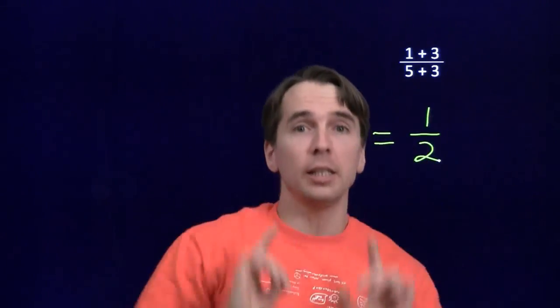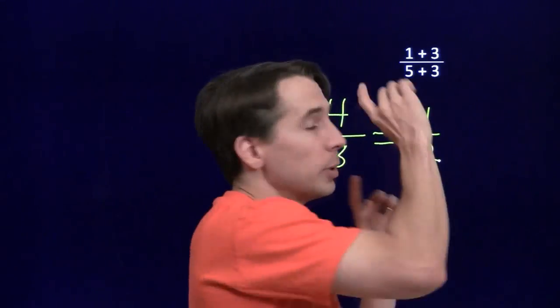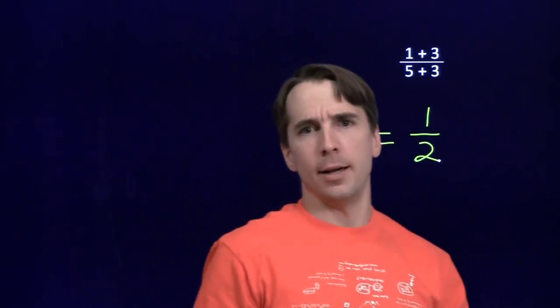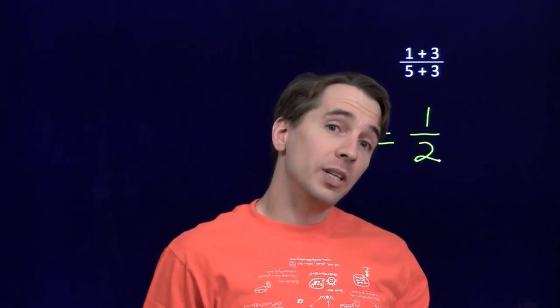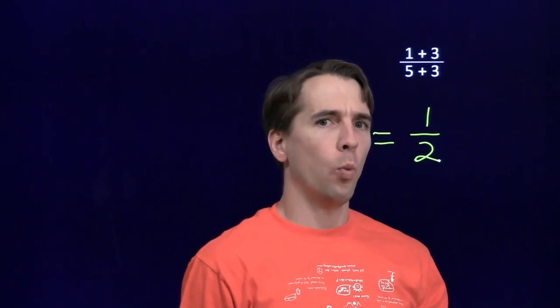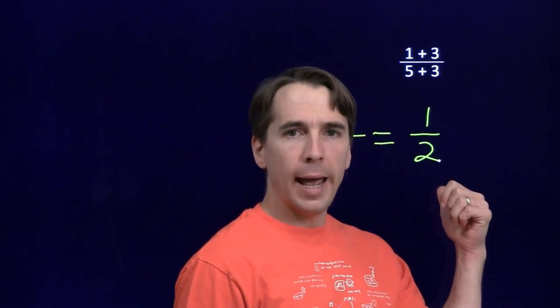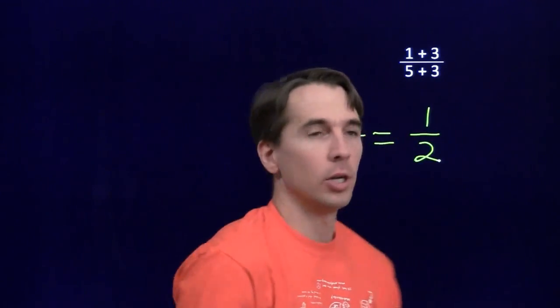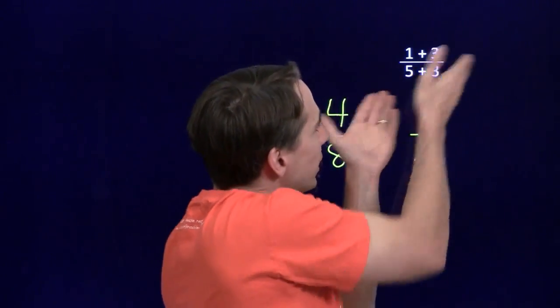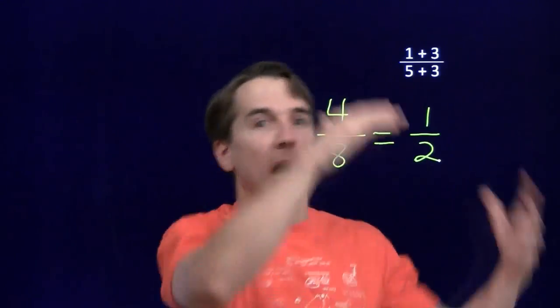Now, maybe you're thinking, hey, cancel the 3s and leave 1s there. So it'll be 1 plus 1 on top and 5 plus 1 on the bottom. Notice I'm not writing that down either, because that's also wrong. 1 plus 1 is 2. 5 plus 1 is 6. 2 over 6 is 1 third, not 1 half. We can't cancel the 3s. We can't cancel the 3s because we can't rewrite this fraction as something times 3 over 3.